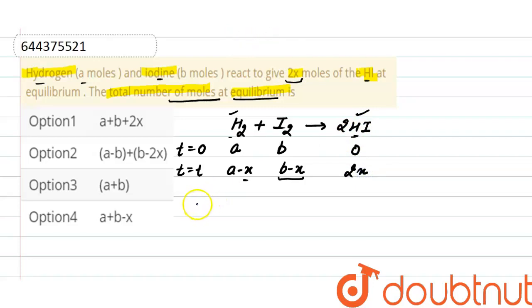Now, the total moles at equilibrium is the addition of moles of H2, I2, and 2HI at equilibrium.